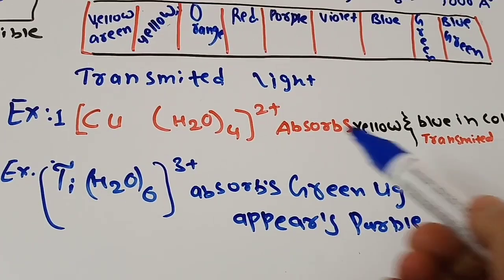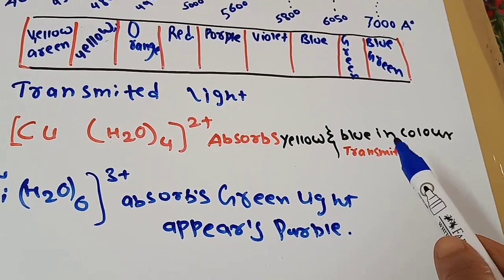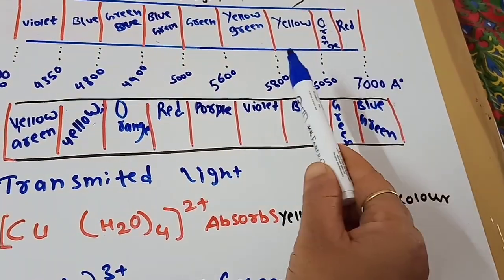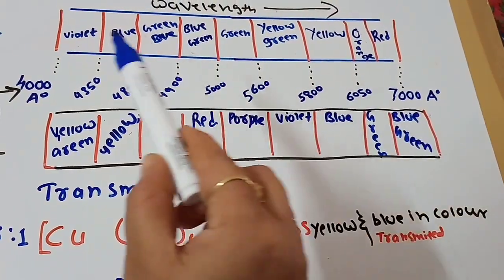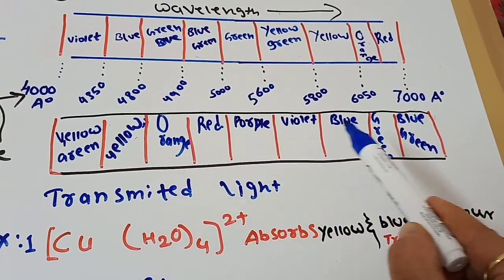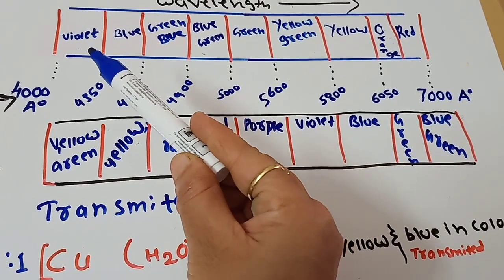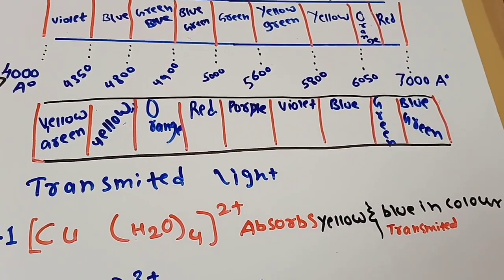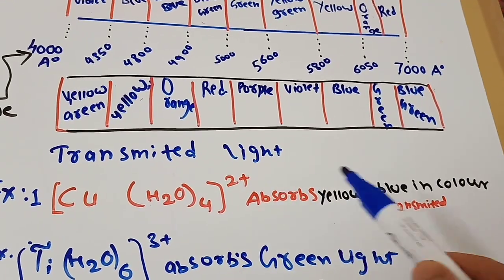For example, the tetraaqua copper complex absorbs yellow light and it appears blue in color. The complementary color of yellow is blue. So it absorbs yellow light and appears blue. If a complex absorbs violet light, it appears yellow-green; if it absorbs blue light, it appears yellow, and so on.